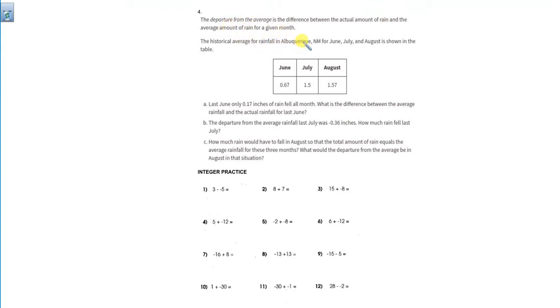The historical average of rainfall in Albuquerque, New Mexico for June, July, and August is shown in the table. These are the historical averages. But last June, they only had 0.17 inches of rainfall all month. What is the difference between the average rainfall and the actual rainfall from last June?